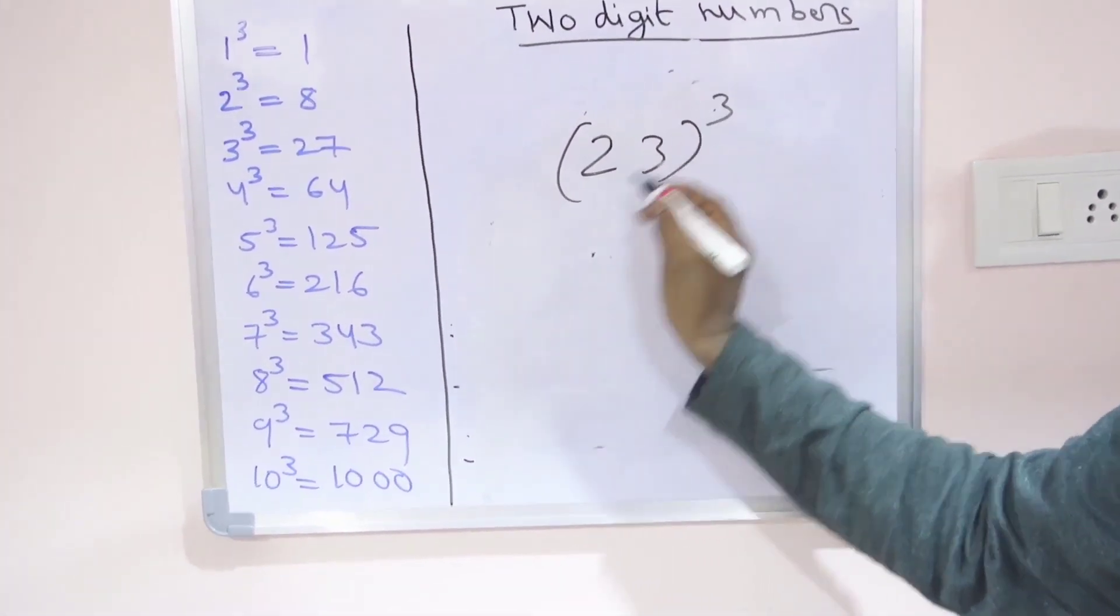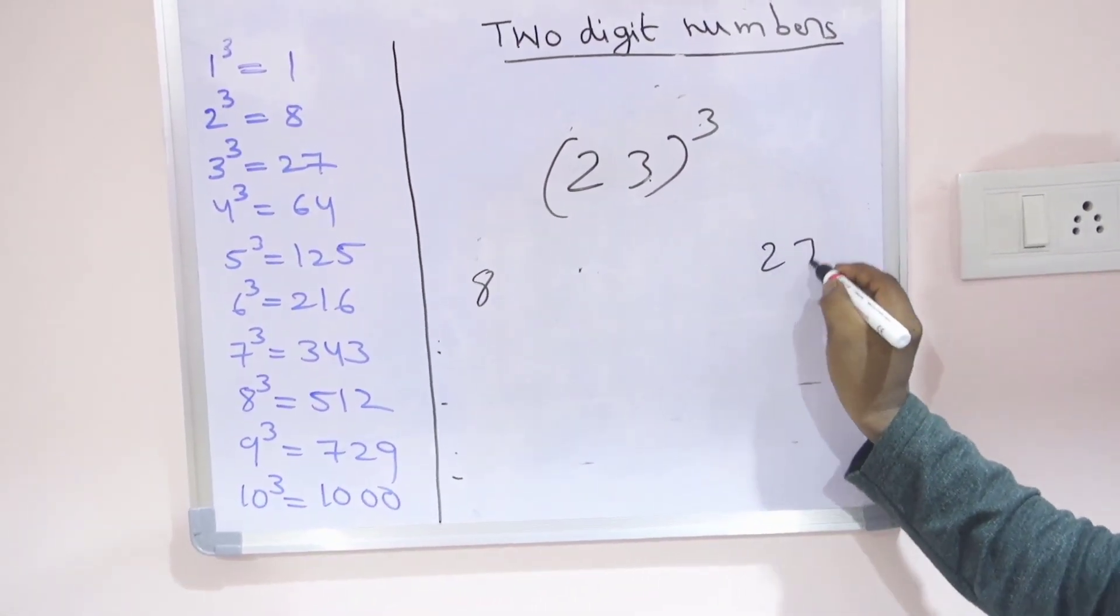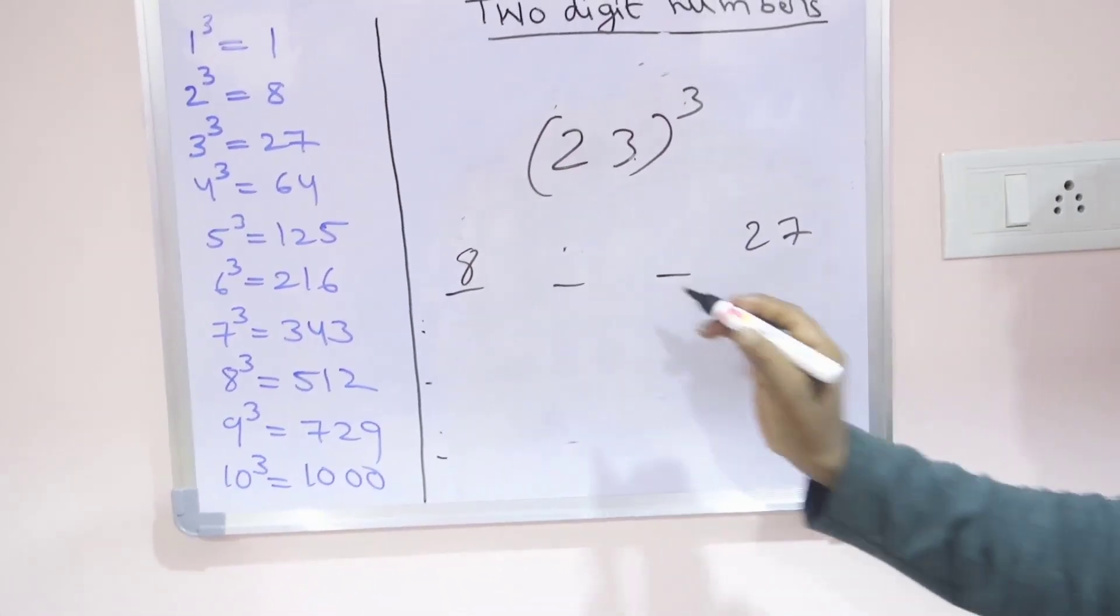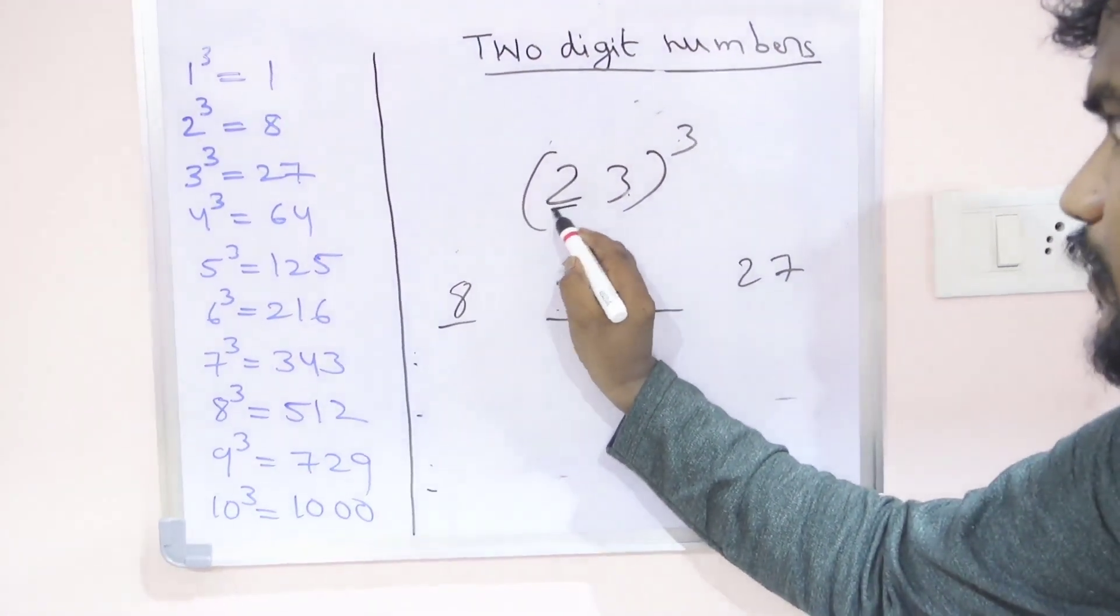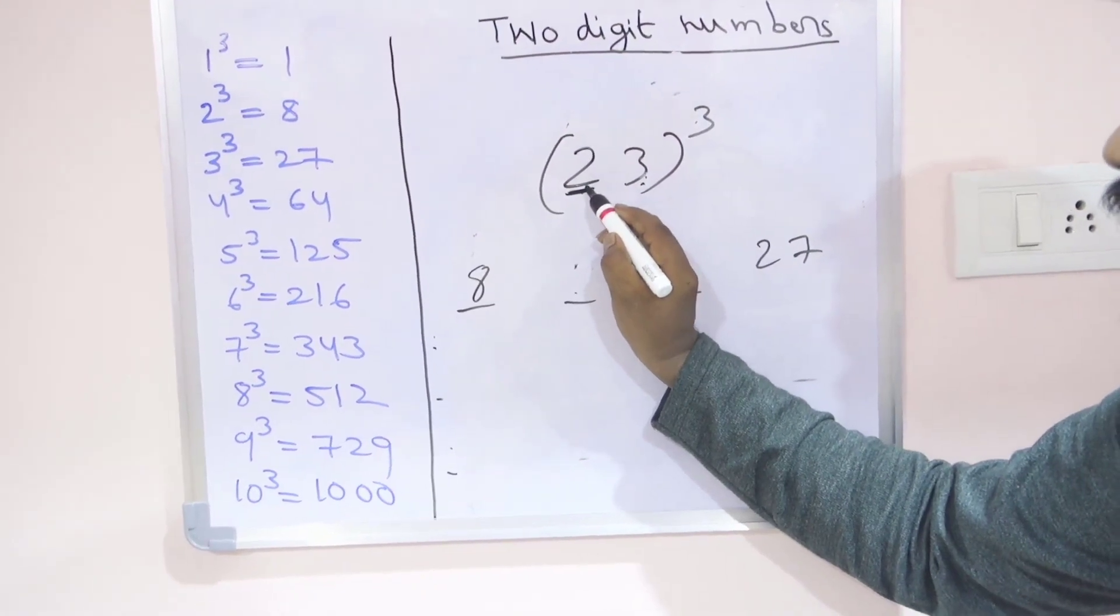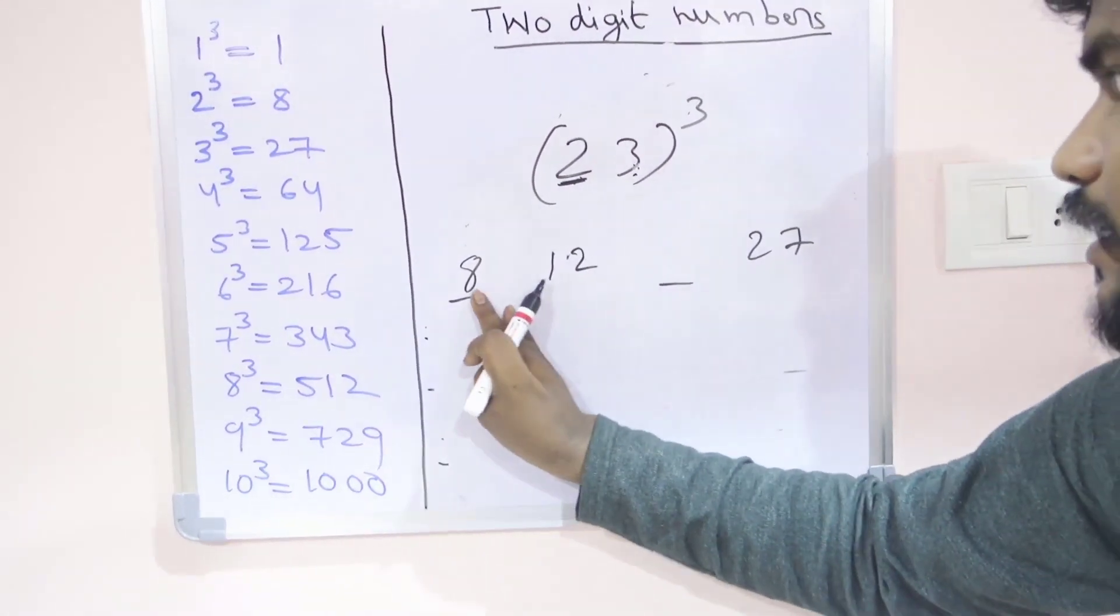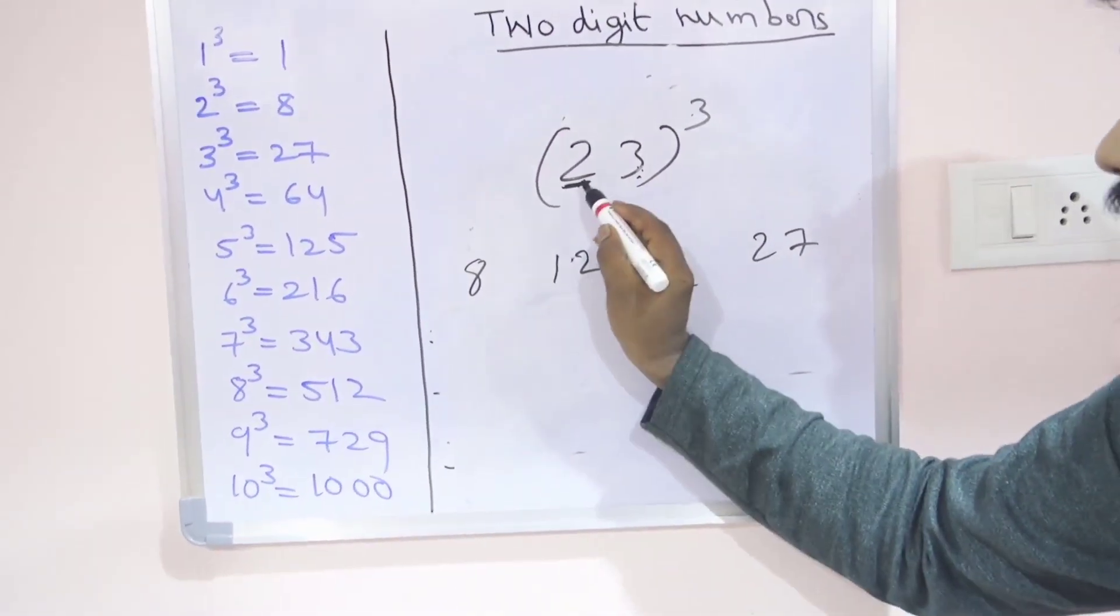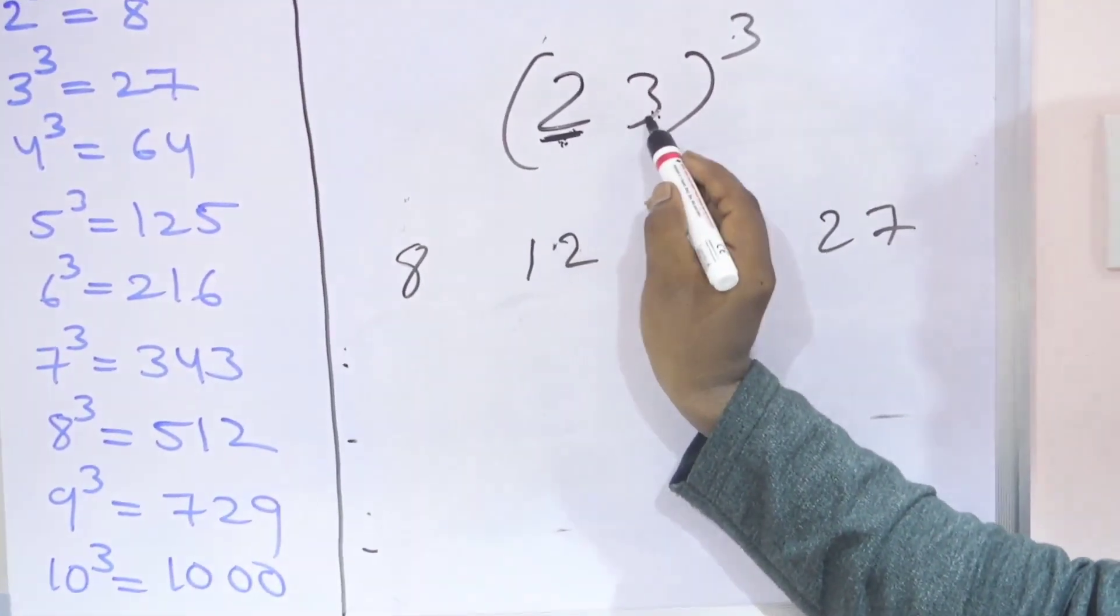First write 2 cube, how much? 8. And 3 cube is 27. Four places somewhere here. Now how to write this number, this number? First of all, square of this number. 2 square, how much? 4. 4 into 3 is 12, write 12 here.